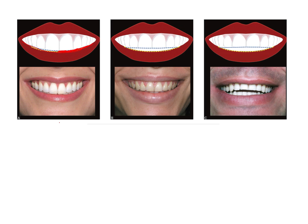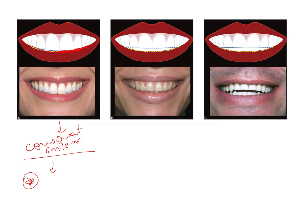When the curve formed by the incisal edges is consonant with — meaning it matches — the curve of the lower lip on smiling, it is known as a consonant smile arc. This is the kind of smile we aim for after any therapy, whether orthodontic or aesthetic procedures on the anterior teeth. A consonant smile arc with full display of the incisors and 1–2 mm of gingival display gives a very youthful, aesthetic appearance.